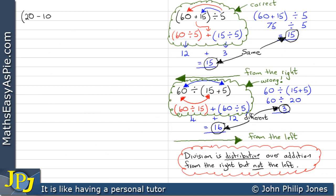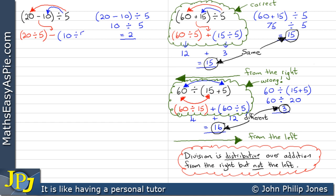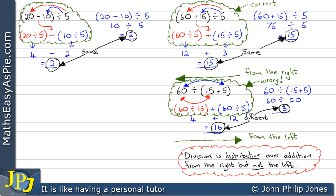Let's consider another example: 20 minus 10 divided by 5. If we work that out over here in blue we can see we end up with 2. Now if I take the 20 and divide that by the 5, bring the minus down, then take the 10 and divide that by the 5 — we can see we end up with 4 minus 2 to give us 2. Consequently the answers are the same, which means these steps are correct. We've done that operation from the right.